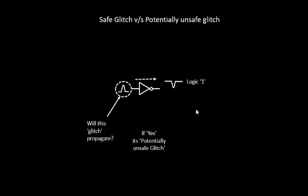It's a potentially unsafe glitch. So there is basically one thing that will lead to a safe glitch or a potentially unsafe glitch, and that is the decision of whether the glitch will propagate through the inverter or not — it could be any logic. We have taken an inverter as an example because most of your logic — AND, OR, and any kind of logic gates — are built on a CMOS inverter logic.